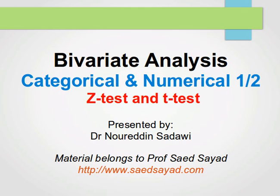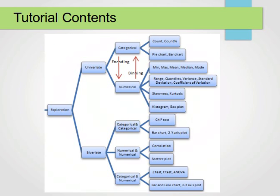In this video I'll be explaining two or three of these techniques and in the next video I'll explain another technique. I'll be focusing on explaining the z-test and t-test. Now before we continue, let's remind ourselves of where we are. We are here doing bivariate analysis covering when one variable is categorical and the other one is numerical. We'll be doing z-test, t-test, and ANOVA will be covered in the next video.